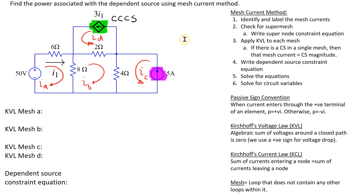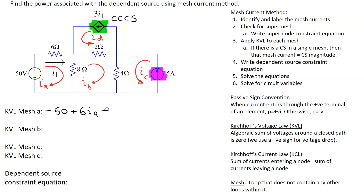Let's now apply Kirchhoff's voltage law to each of the meshes. Starting with mesh A at the 50-volt source: current IA is entering the terminal marked minus and leaving the terminal marked plus, so going from minus to plus is a voltage rise, giving −50. The next term is a voltage drop across the 6-ohm resistor, giving 6·IA. The last element is the 8-ohm resistor, which has two mesh currents flowing in opposite directions, giving 8(IA − IB) = 0.